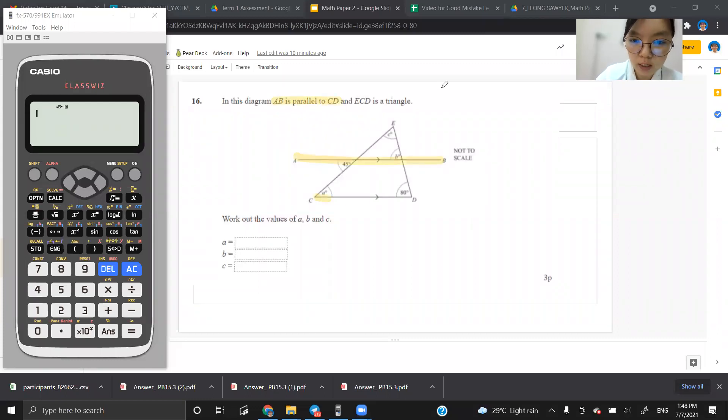AB parallel to CD. Parallel means there is an arrow here, representing here, meaning that these two lines will never meet.